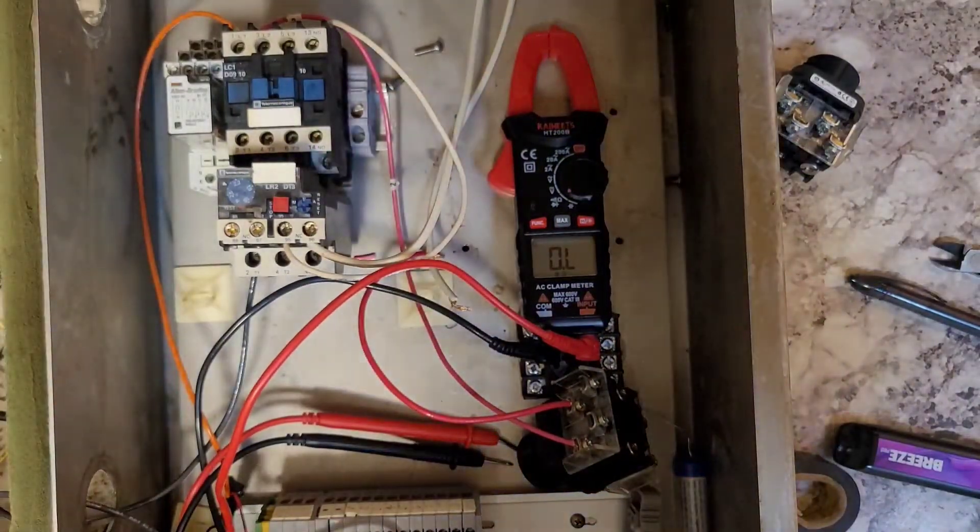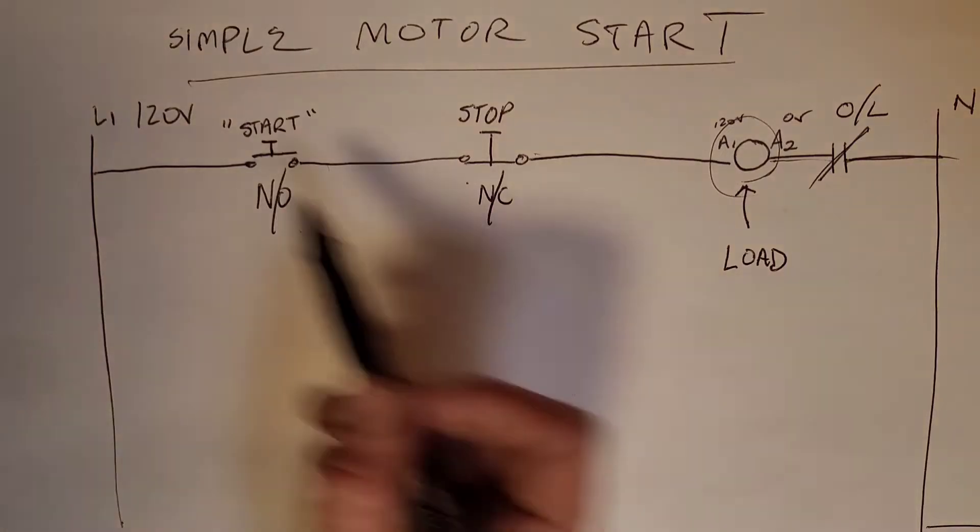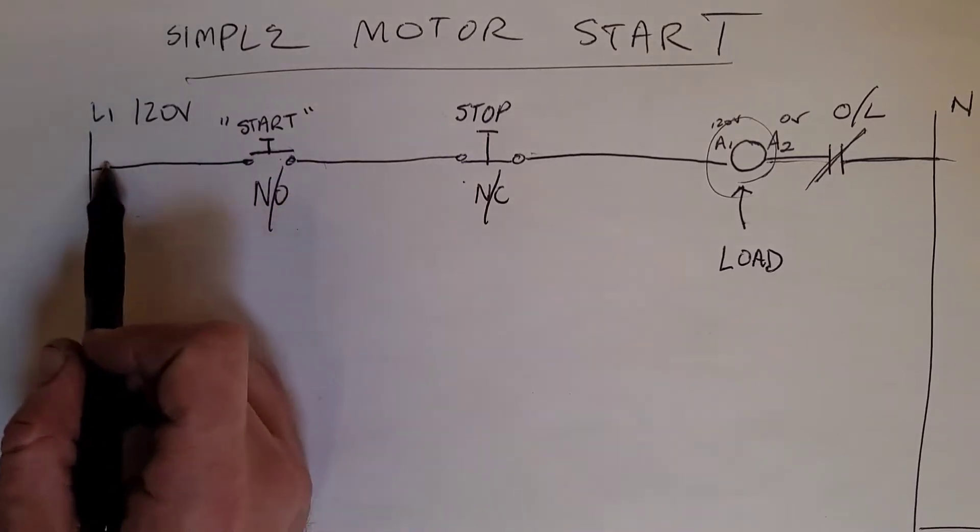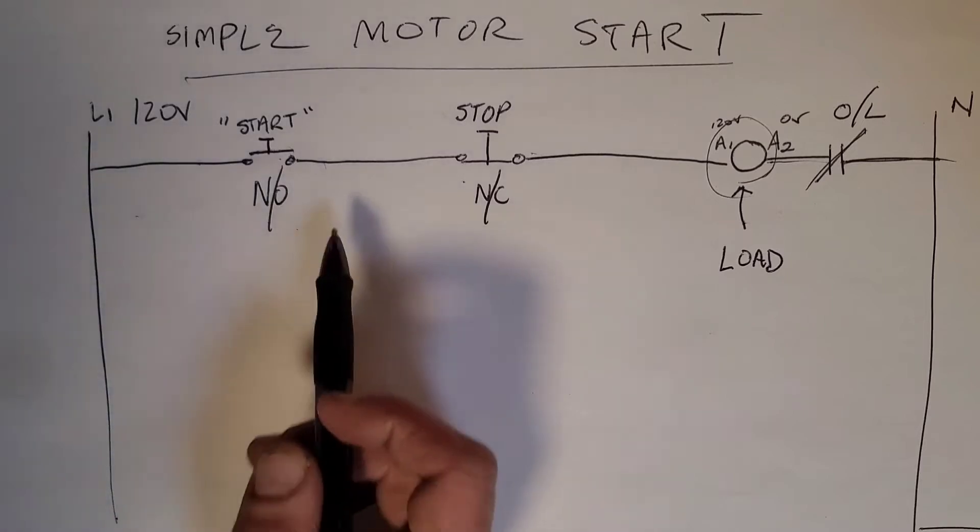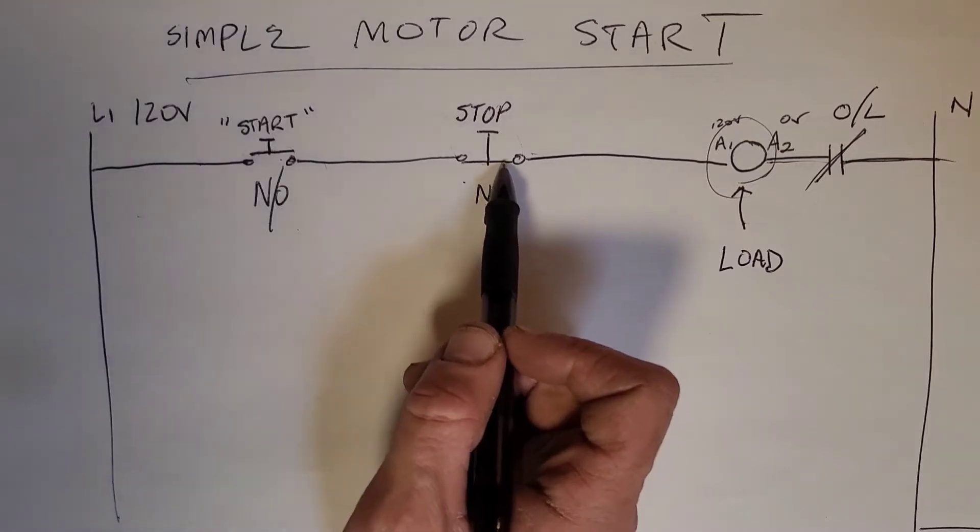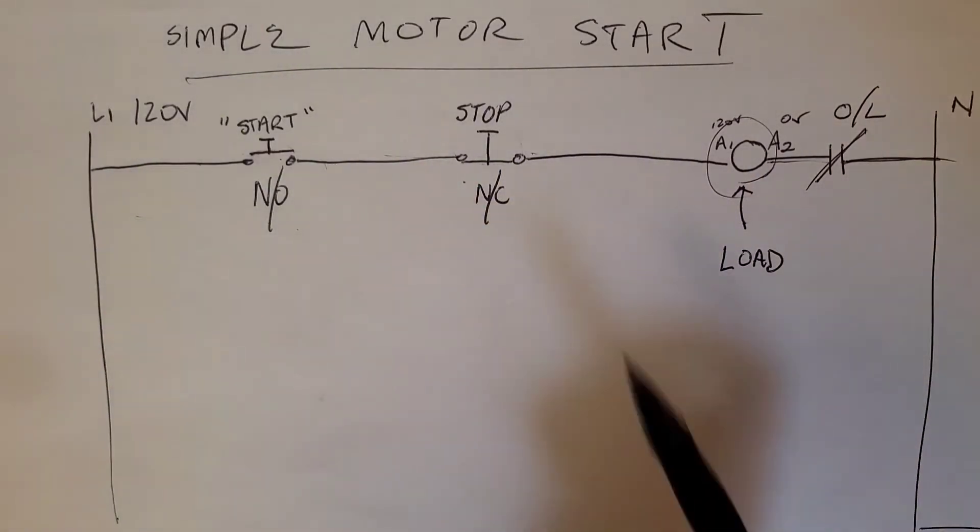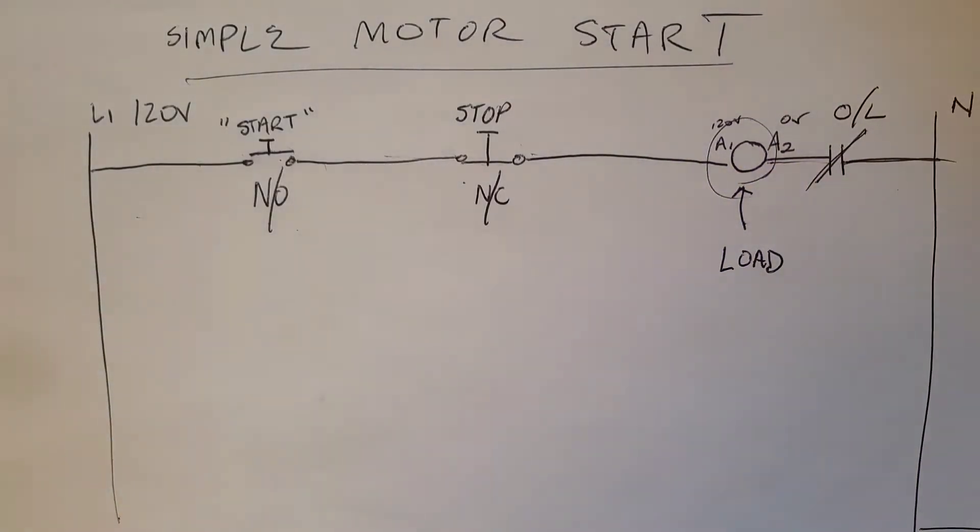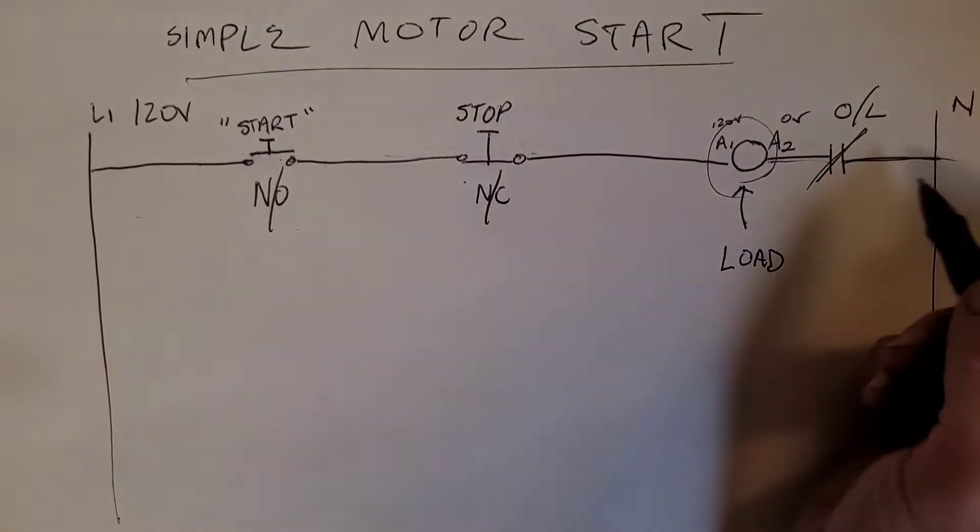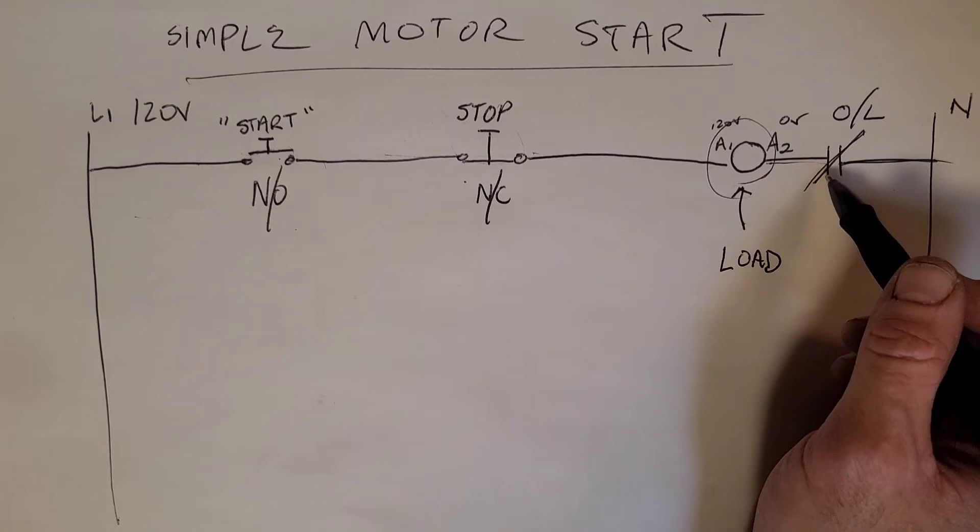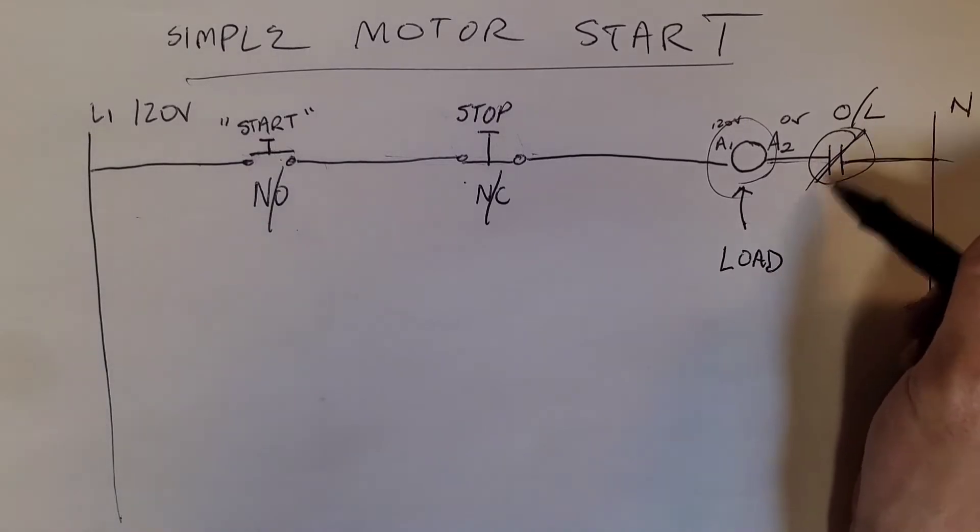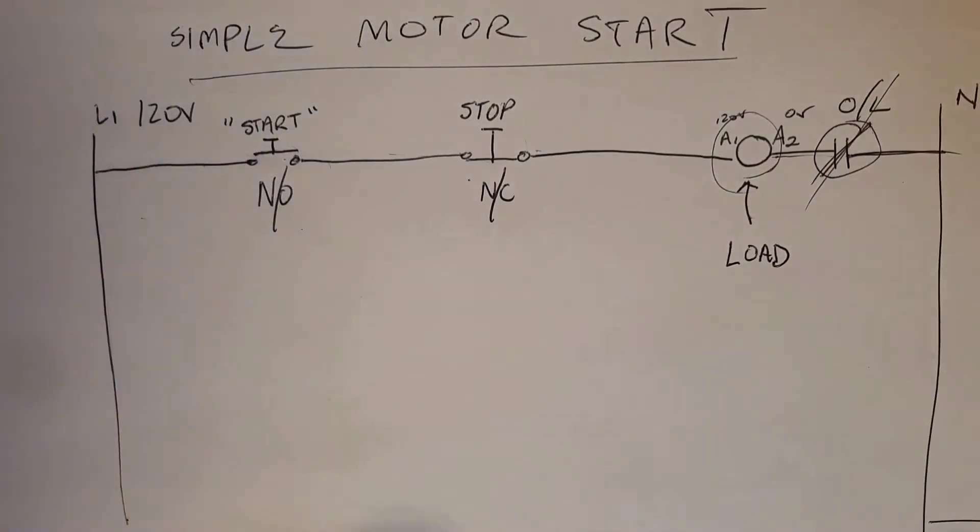To review, we got our motor start circuit right here. Our start button is normally open, so that is going to be dead until we push that in, making it into a closed state, bringing our 120 over here. As long as our stop push button is not pushed, that will continue because it's normally closed, and that will go over A1 and A2, which is our load. Then we're going to go through the thermal overload unit contacts. If there is a high current or over current situation, this set of contacts is going to open up and kill our circuit.